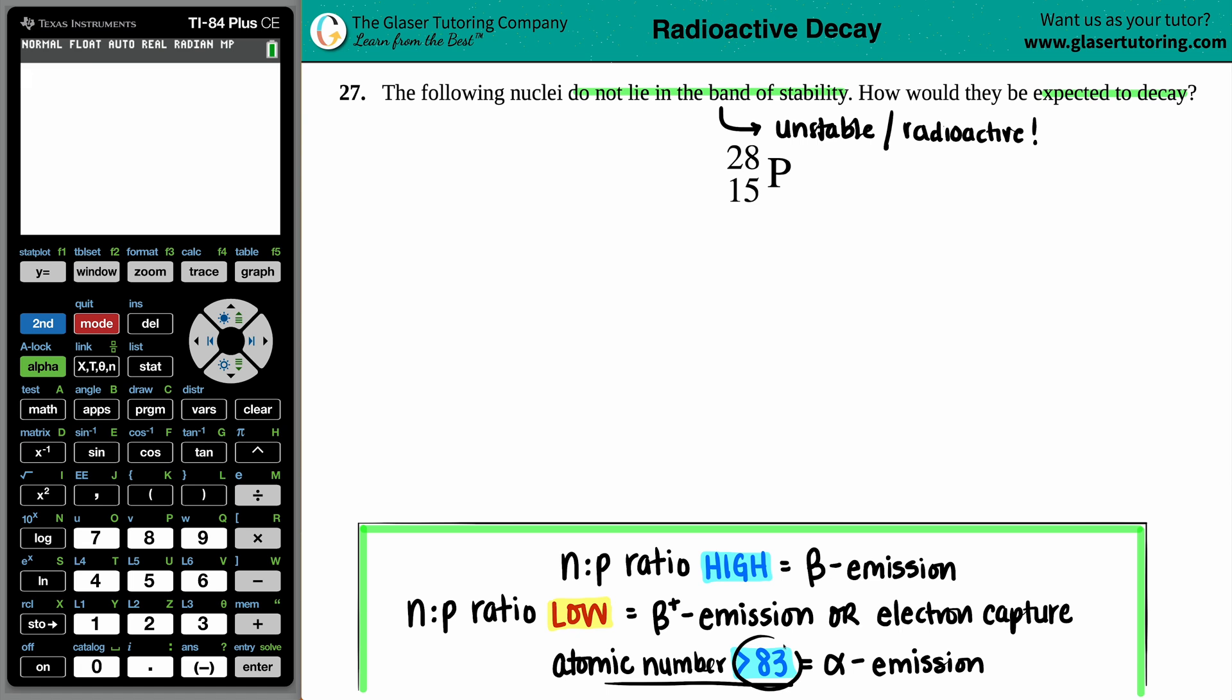If you have an atomic number that's greater than 83, more chances than not the nuclei will undergo alpha emission. But we have an atomic number of 15, so no worries about that. We've automatically eliminated the alpha emission.